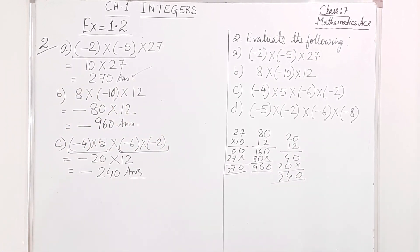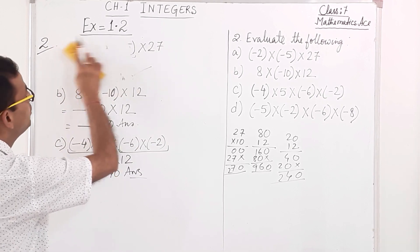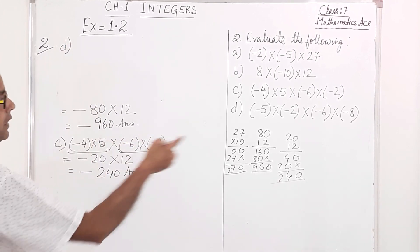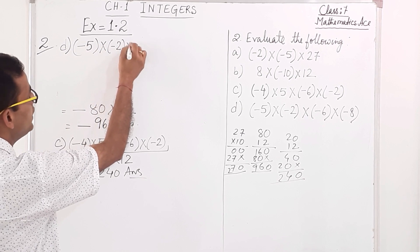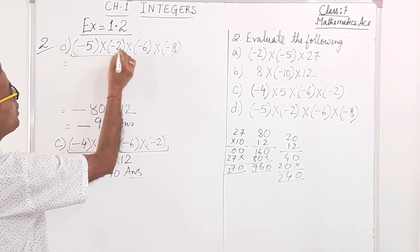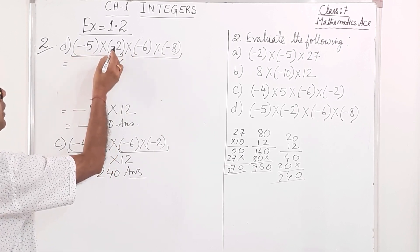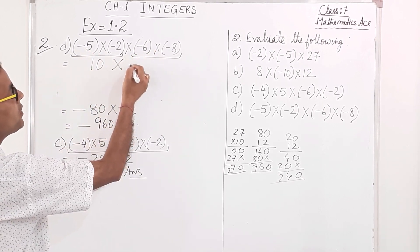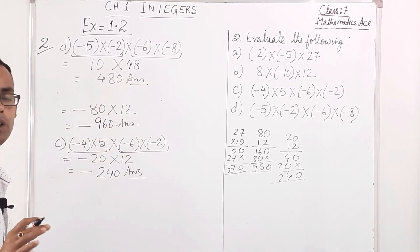Number D: minus 5 into minus 2 into minus 6 into minus 8. First, minus 5 into minus 2 — same sign — gives positive 10. Then minus 6 into minus 8 — same sign — gives positive 48. Finally, positive 10 into positive 48 gives 480. Question number 2 is over.